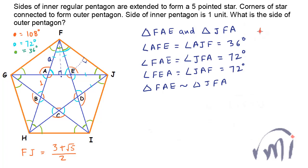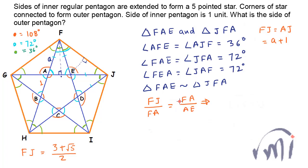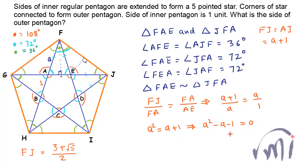FJ equals AJ and both of them equal A plus 1. Since these two triangles are similar, the ratio of their corresponding sides will be equal. So FJ to FA equals FA to AE. We know FJ equals A plus 1, so the ratio of (A + 1) to A equals A to 1, giving us A² equals A + 1. Rearranging: A² minus A minus 1 equals 0. This is a quadratic equation and we can find its roots using the formula.